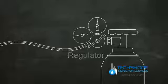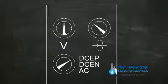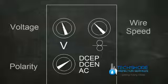In MIG welding, all the machine controls are set on the machine itself. The most important of these are polarity, wire speed, and voltage. The trigger on the gun is just an on-off switch.